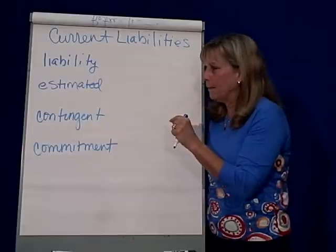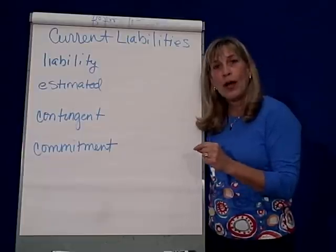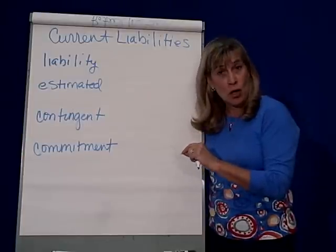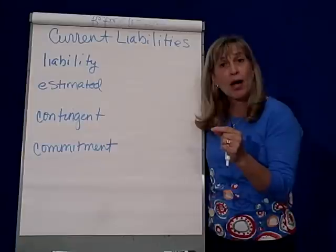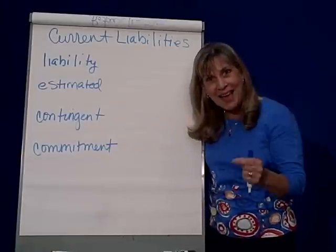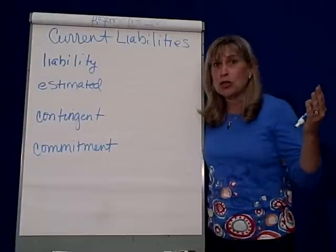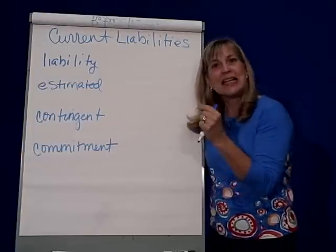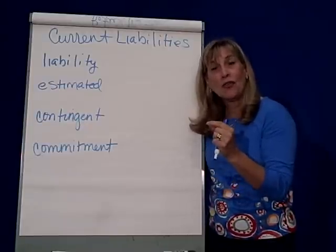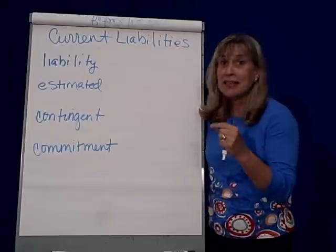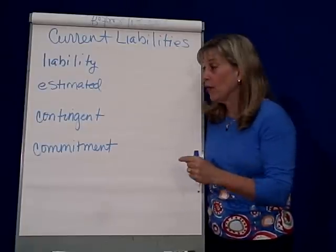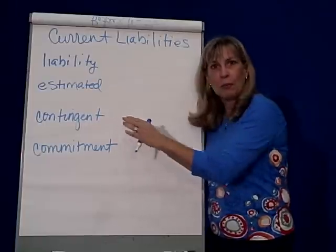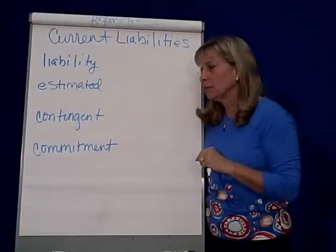A contingent liability is where you're not directly responsible, but you have guaranteed a note, or it's contingent upon a future event. For example, your dad has guaranteed your car loan, but dad is not responsible for the loan unless a future event happens — which is the kid doesn't make the car payments. So a contingent liability is kind of like, maybe I won't have to pay it, because the primary person is supposed to pay it instead.